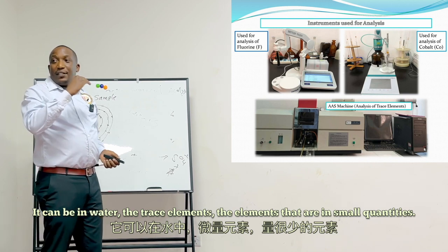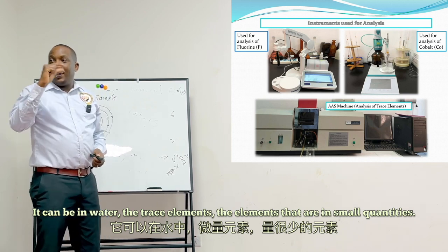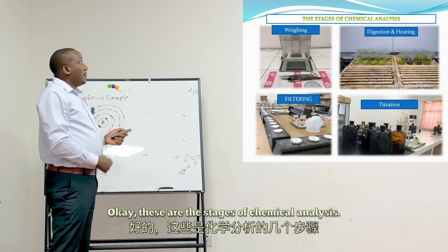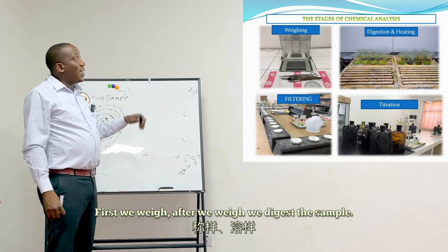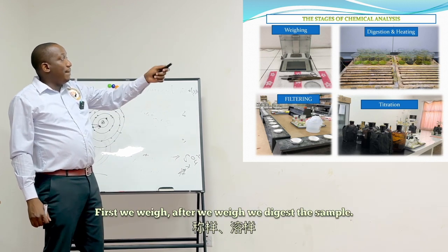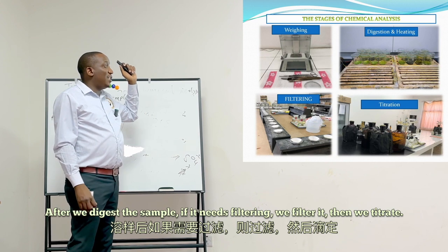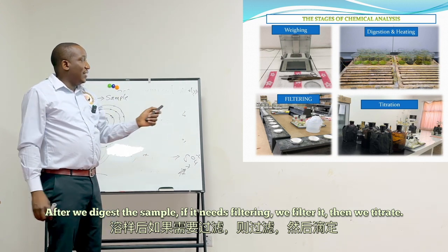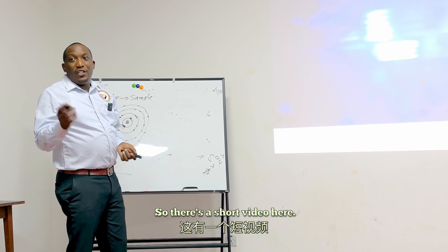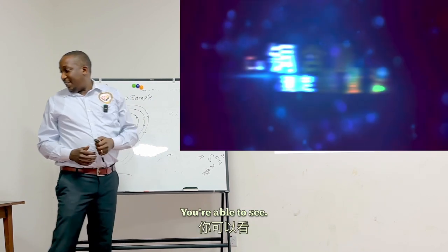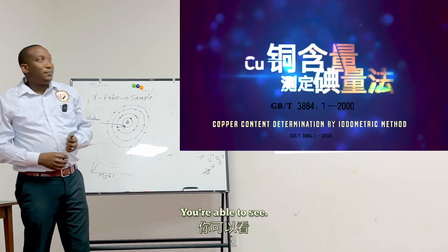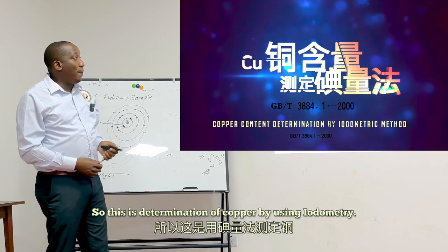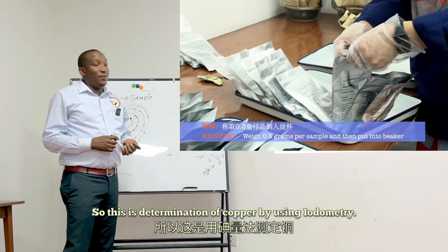These are the stages of chemical analysis: first we weigh, then we digest the sample, then filter if needed, and then titrate. Here is a short video showing the determination of copper using iodometry.